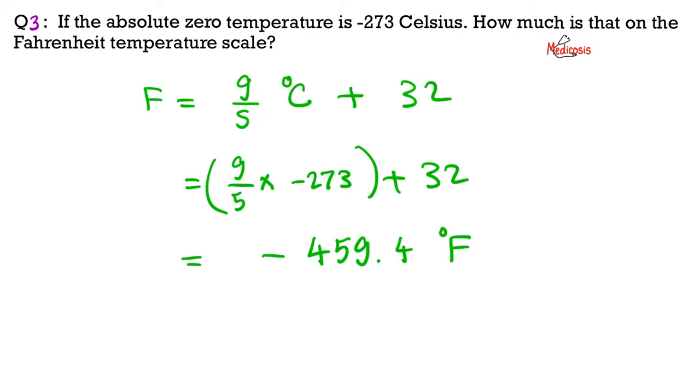Remember, when we talked about Kelvin scale last video, Kelvin can never be negative. Celsius can be negative. Fahrenheit can be negative, but not Kelvin. Because the lowest possible temperature ever, which is the absolute zero temperature, is zero degrees Kelvin. You cannot get lower than zero on the Kelvin scale.